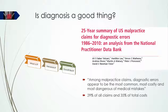Now let's look at some of the good things about getting a diagnosis right. This study shows that in the United States, diagnostic errors are the most common causes of alleged malpractice, constituting 29% of all claims and accounting for 35% of total costs. Bear in mind that these lawsuits arise out of not just mistakes in diagnosis, but in failure to make a diagnosis as well. This suggests that, in the United States at least, making the wrong diagnosis or failing to make a diagnosis is not recommended.